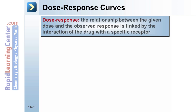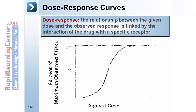The basic premise underlying pharmacology is that for a given dose of a drug, there will be a given biological response that is directly proportional to the given dose. Given that drugs act through receptors, the relationship between the given dose and the observed response is linked by the interaction of the drug with a specific receptor in a phenomenon called the dose response. At low doses, the effect of a drug will increase as the concentration increases. As the dose increases, the response increment reduces until the point where no more increase in drug effect is seen — commonly referred to as the plateau.